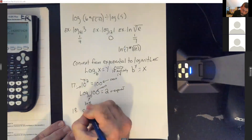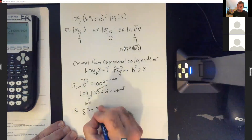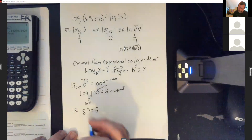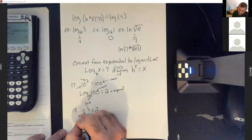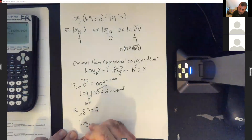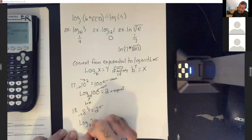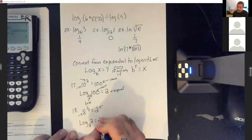Next: 8 to the 1/3 equals 2. Write log, base is 8, result is 2, and that equals the exponent of 1/3. So log base 8 of 2 equals 1/3.